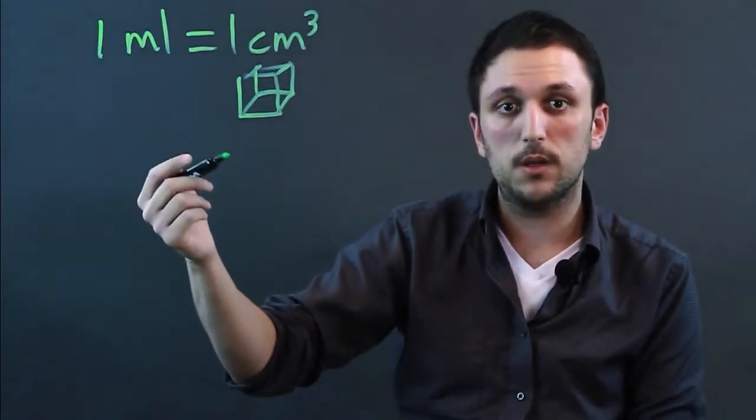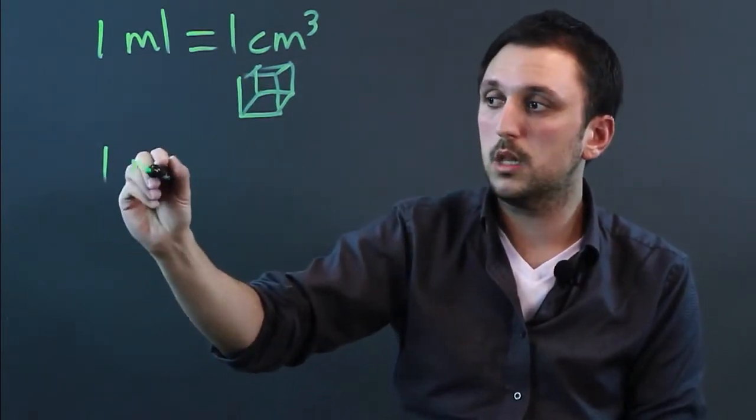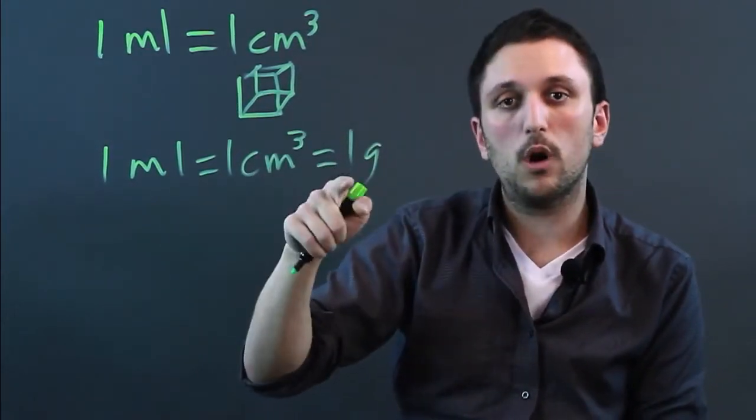The general conversion with the metric system is, this is for water. So one milliliter equals one centimeter cubed, which equals one gram of water.